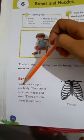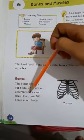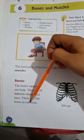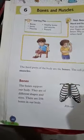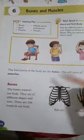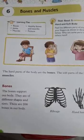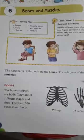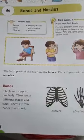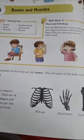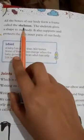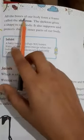Bones support our body. They are different shapes and sizes. There are two hundred and six bones in our body.